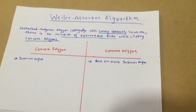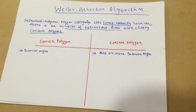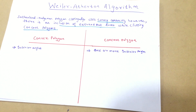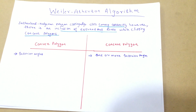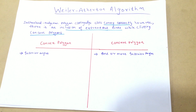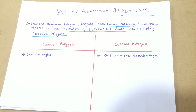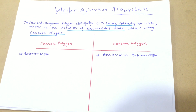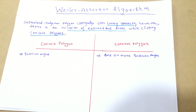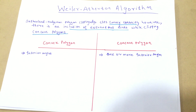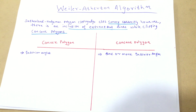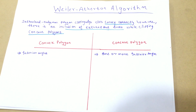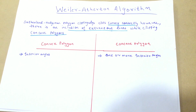Hi guys. In today's lecture we are going to be learning about the Wheeler-Atherton polygon clipping algorithm. The main reason why the Wheeler-Atherton polygon clipping algorithm came into place was because the Sutherland-Hodgman polygon clipping algorithm had a few discrepancies. If you don't know what a Sutherland-Hodgman polygon clipping algorithm is, I have kept a link in the description below — I would love if you guys check out that video first before learning this algorithm.